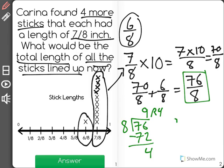Now your remainder becomes, your 9 is your whole number, your remainder becomes the numerator, and the denominator remains 8. So we have 9 and 4 eighths.